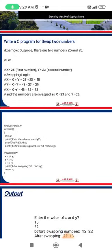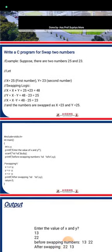First of all, we include the hash include stdio.h header file, which is the standard input/output file. Then we define the main function where the actual execution of the program starts. The integer data type is used for the variables whose values will be read and printed.